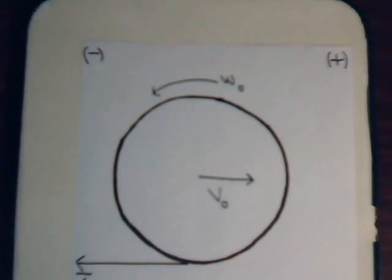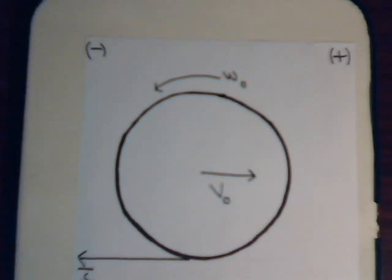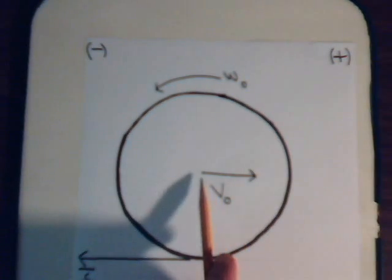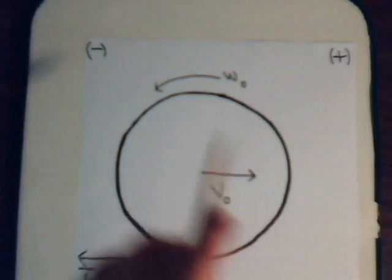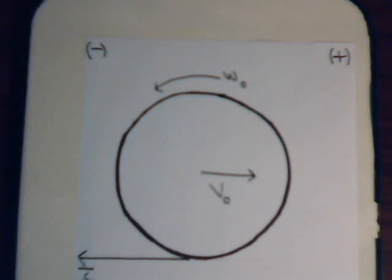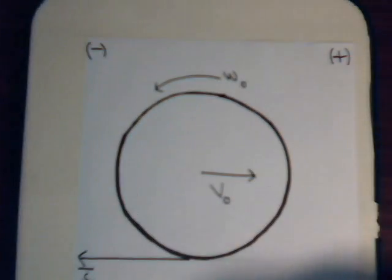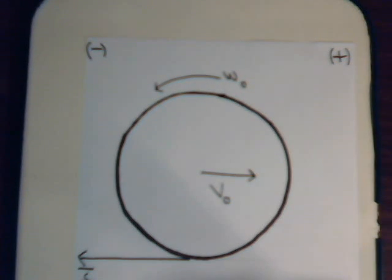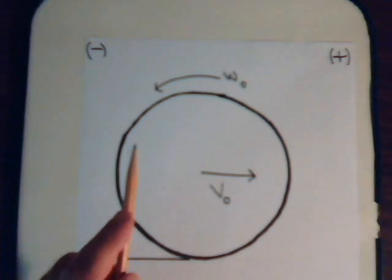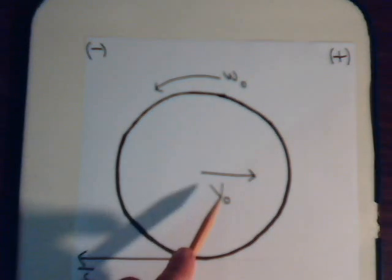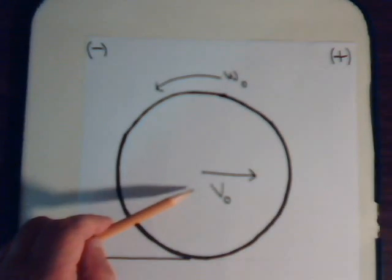In this video, we're going to consider a situation where we have a ball in motion — it could be a billiard ball or a bowling ball. It has linear velocity in one direction and angular velocity in the opposite sense. We want to consider a situation where it skids forward, comes to a brief stop, and then skids backwards. What we're going to do is determine what the initial values of V-naught and Omega-naught would have to be in order to get that kind of behavior.